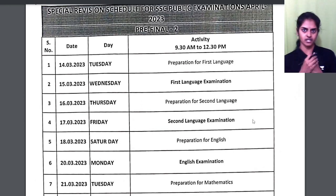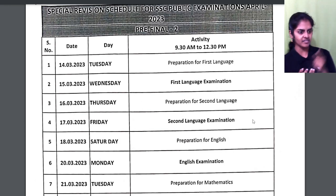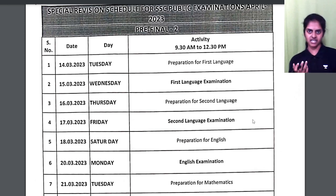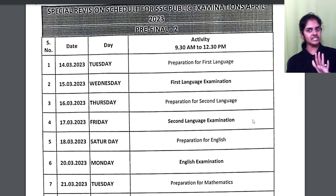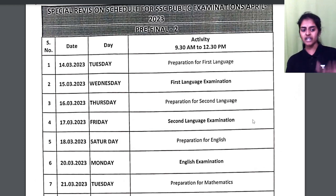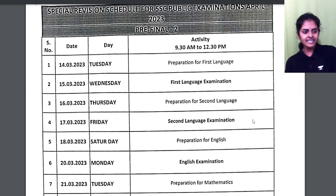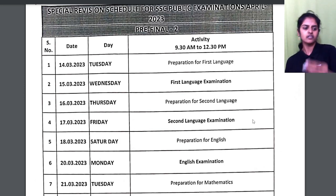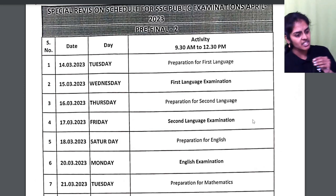On 14th March you will have preparation for first language. On 15th March the actual exam starts — you will have your first language exam. Then 16th you will prepare for second language, and 17th March you will write the second language exam. Then 18th Saturday you will prepare for English.